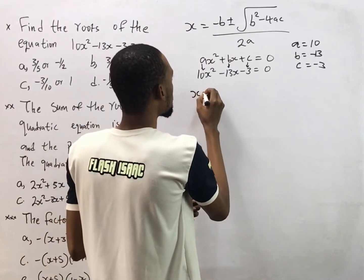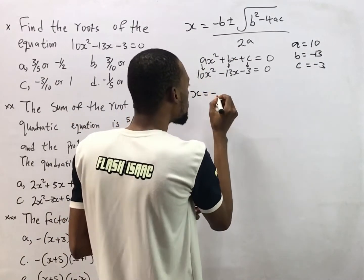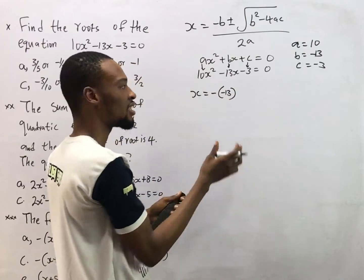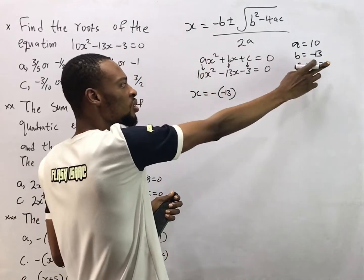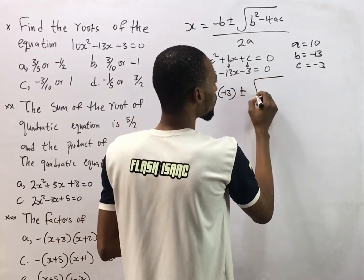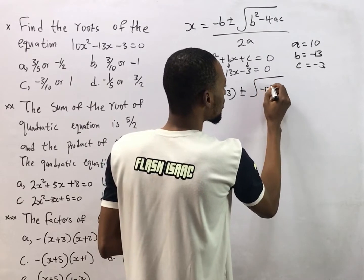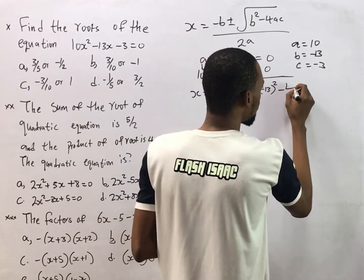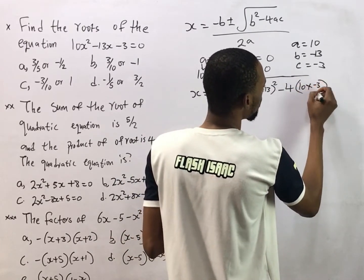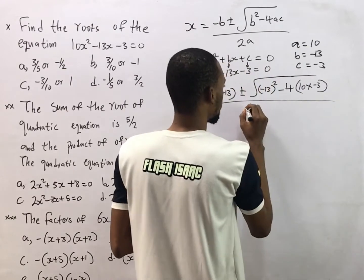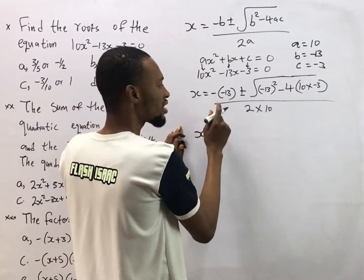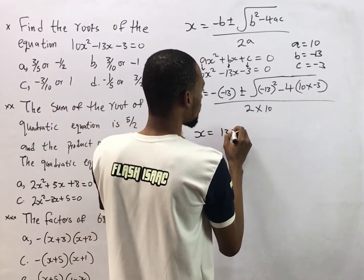Substituting gives us s equals negative b — b is negative 13, so negative of negative 13. Note that the formula already has a minus and b also has its own minus, so minus of negative 13. Then plus or minus the square root of b squared — that's negative 13 squared — minus 4 times a, which is 10, times c, which is negative 3. All over 2 times 10.